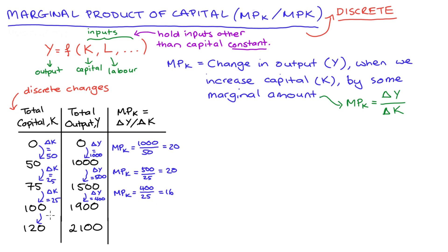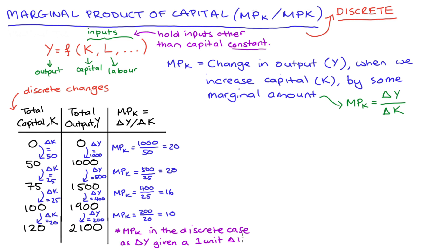The last change: going from 100 to 120 units of capital, so our increase in capital is 20. Output increases from 1900 to 2100 — an increase of 200 — so our marginal product of capital is 200 divided by 20, which equals 10. It's worth noting that the formula we're using with discrete changes gives us the marginal product of capital in terms of a one-unit change in capital. We're normalizing the change in output to be per unit of capital added, and that's the interpretation we use in the discrete case.